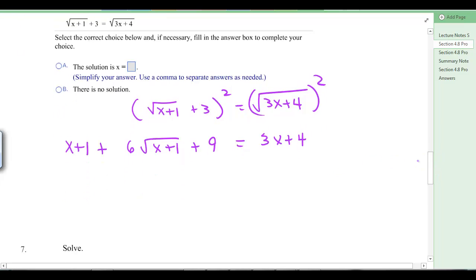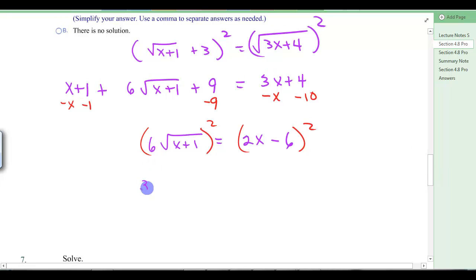Let's get everything except the radical on the other side because we're probably going to have to square again. So let's subtract the x, subtract the x, subtract the 1, subtract the 9. Over here, we've got a minus x and a minus 10. So now we've got 6 square roots of x plus 1 equals 2x minus 6. And we're going to square again. So we'll take both of these and square because we've still got to get rid of that radical. So 6 squared is 36 times, when you square that, you just have x plus 1 equals 4x squared minus 2x times 6 is 12x times 2 is 24x plus 36.